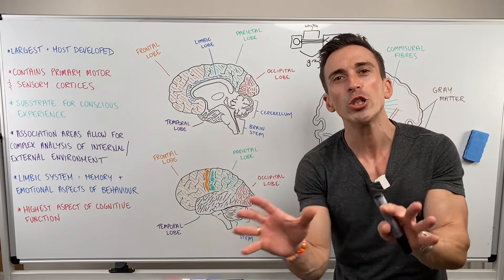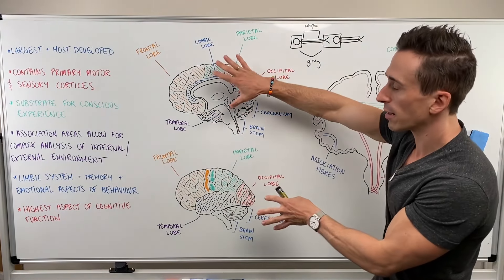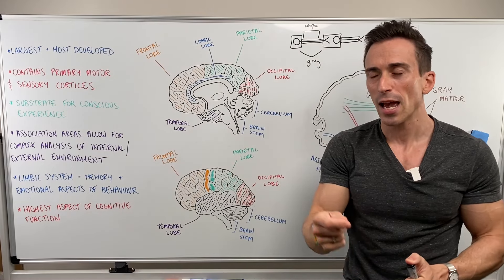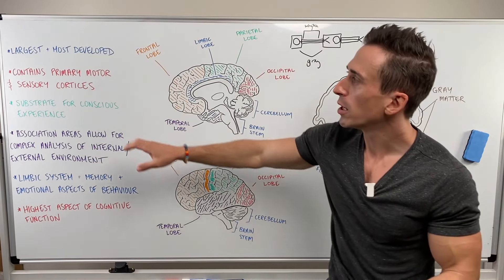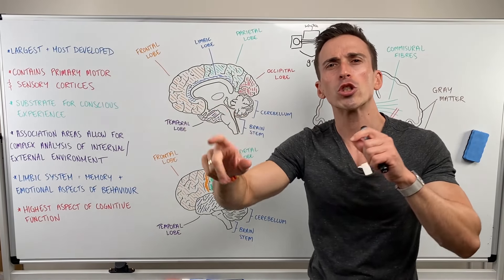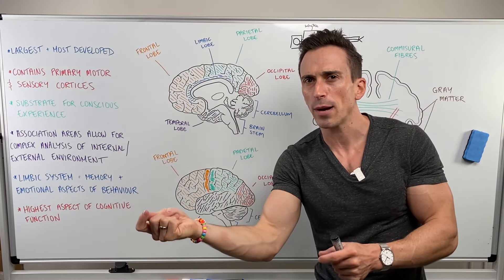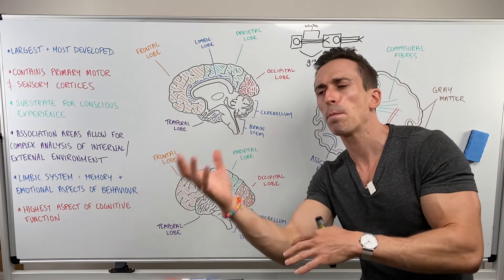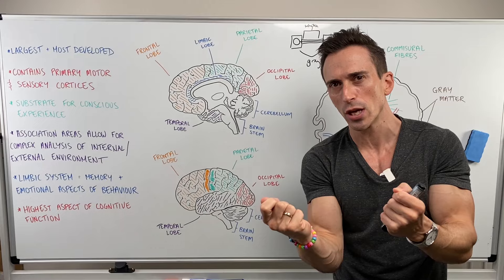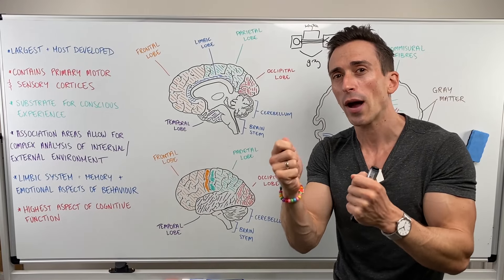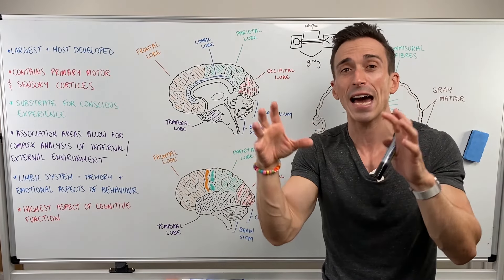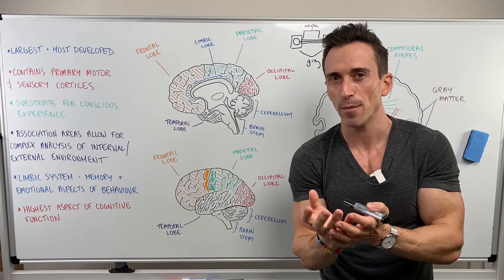We've also got association areas, which are part of the cerebral hemispheres. Association areas help the primary motor and sensory cortices by associating previous information with current information — comparing and contrasting what it already knows so that you now have more information. It's basically a way to analyze complex information.